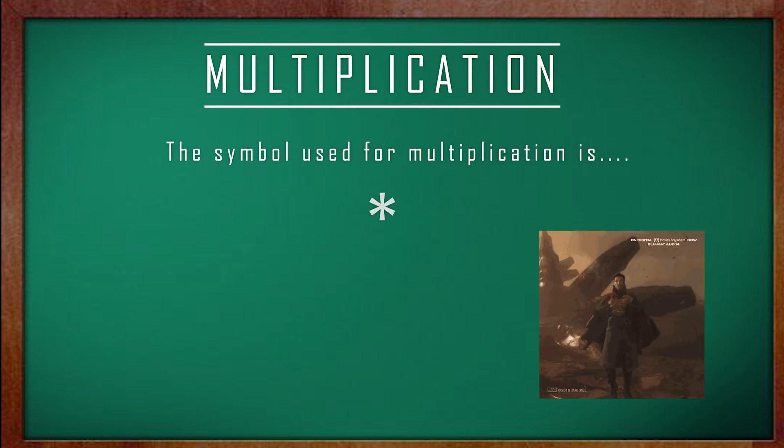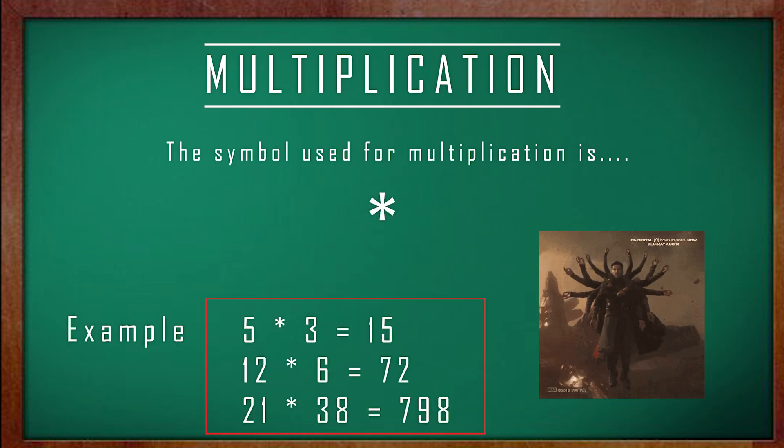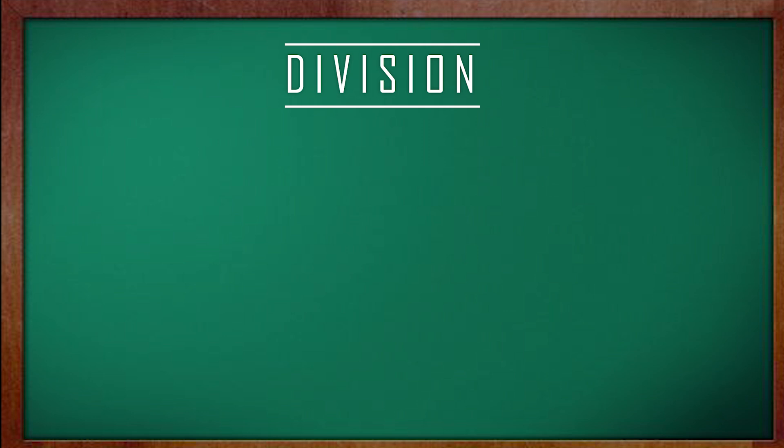However, with multiplication it's a little different. Here we use the asterisk key or the star sign. And for division, we use the forward slash.